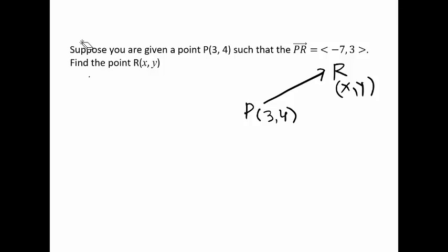...such that the vector PR is <-7, 3>. The x component of the vector PR is negative 7 and the y component is 3. Since R is the terminal point, we can rewrite our vector PR as...